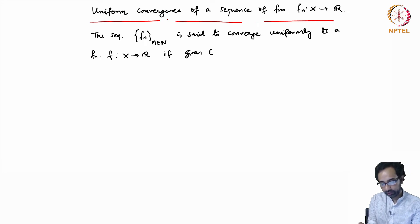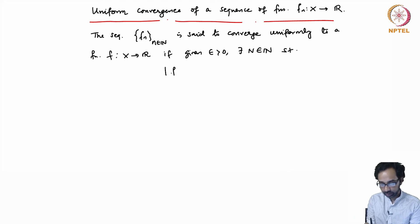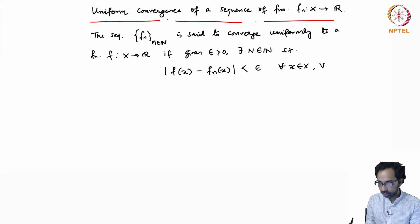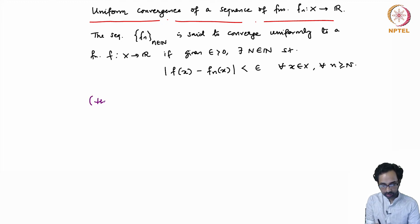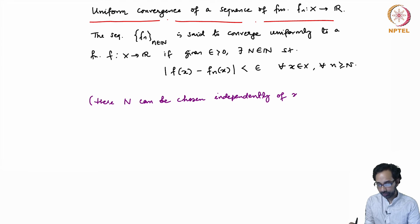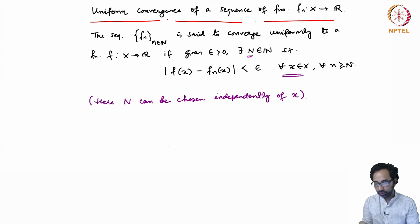The condition is: given any ε > 0, there exists a capital N in ℕ such that the absolute value |F(x) − Fₙ(x)| is less than ε for all x in X and for all n ≥ N. The difference between pointwise convergence and uniform convergence is that here capital N can be chosen independently of the point x — this capital N works for all x. This is what the 'uniformity' means in so-called uniform convergence.